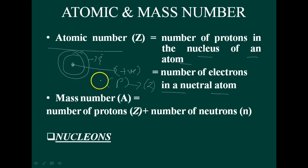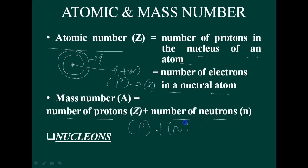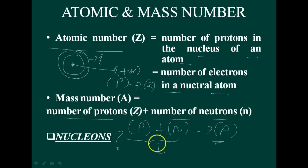Now coming to the mass number: mass number means the number of protons plus the number of neutrons. The mass of a nucleus is due to protons and neutrons. Protons and neutrons which are present in the nucleus are collectively known as nucleons. The mass number is represented by A.